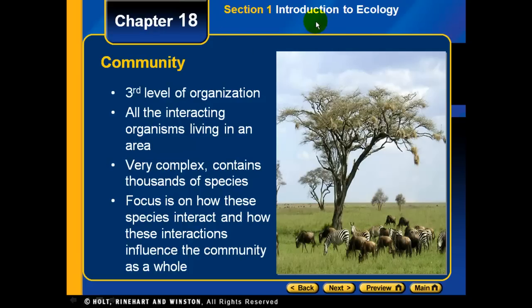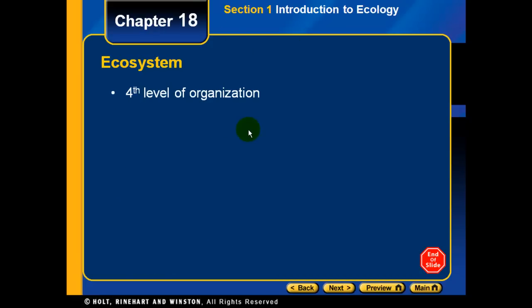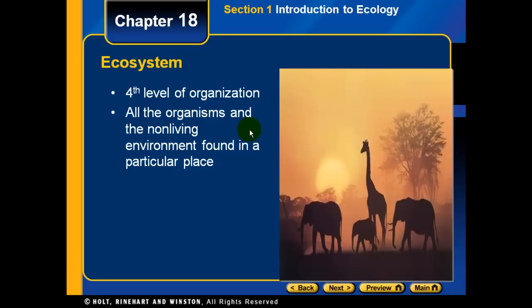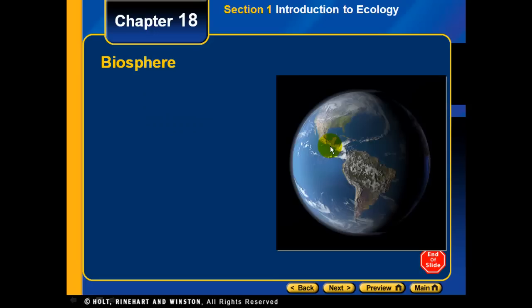The fourth level of organization is an ecosystem. An ecosystem includes all the organisms but also the non-living components of the environment found in a particular place — such as the sun, the air, the ground, the soil, and so on.